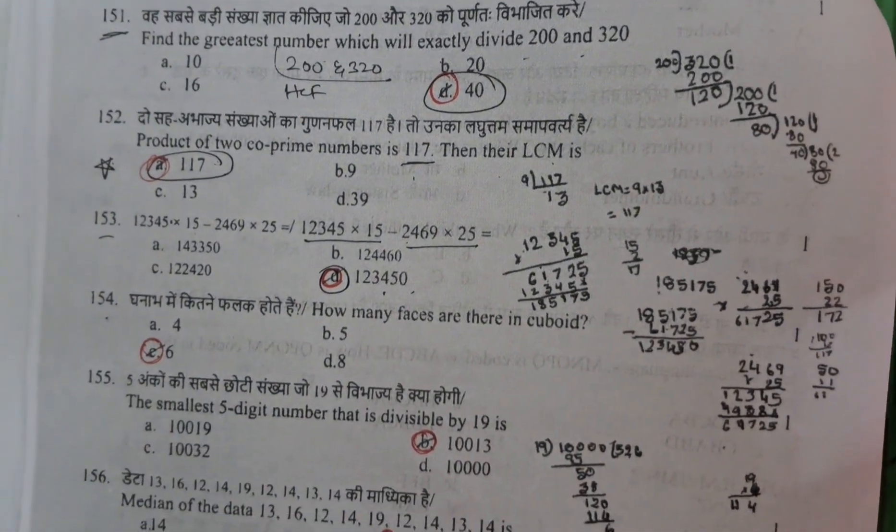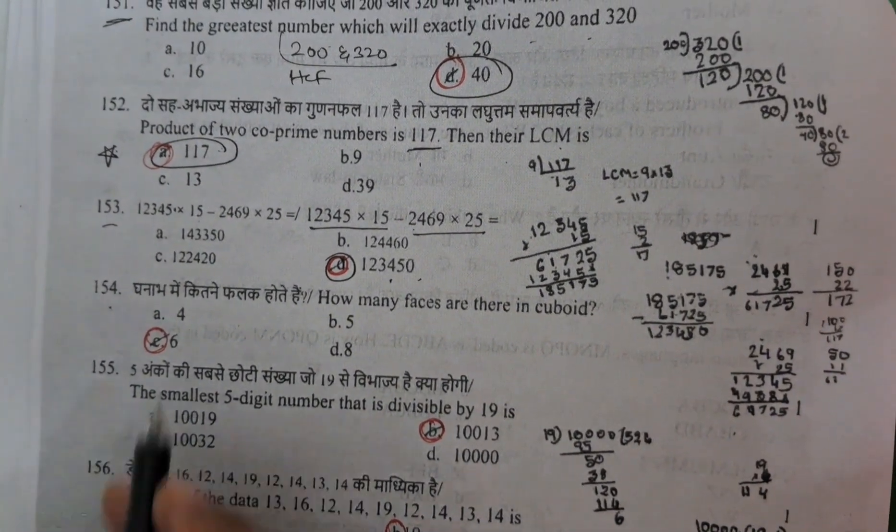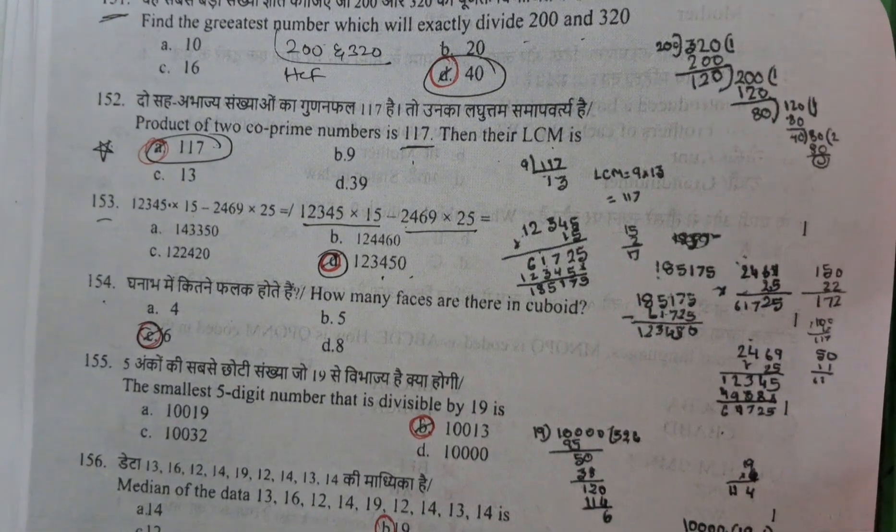And next 153, it is nothing but simplification. We need to do multiplication these two, these two. Then after if you subtract, you will get the answer 123456. Question 154, how many faces are in the cuboid?